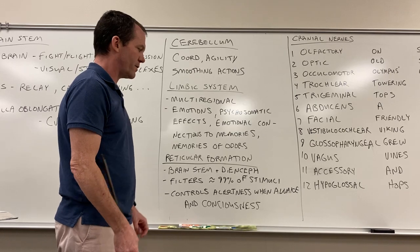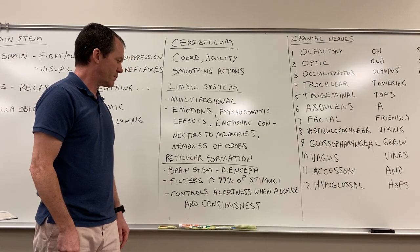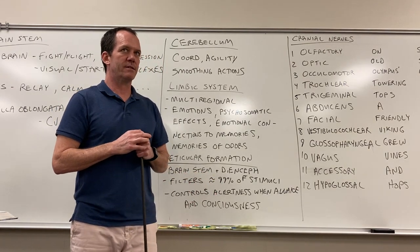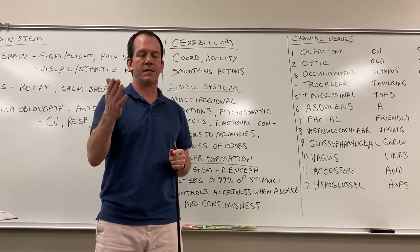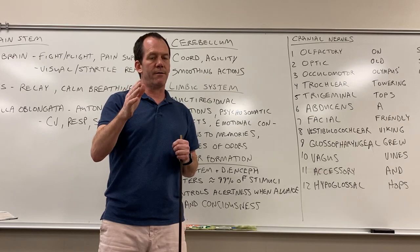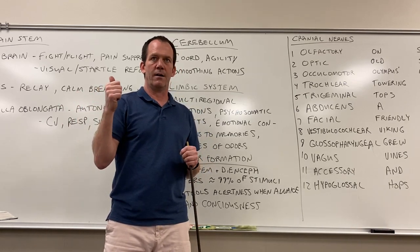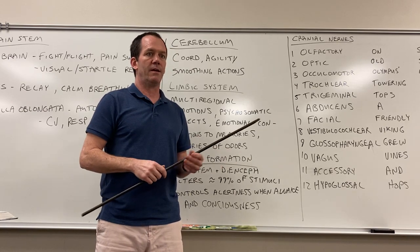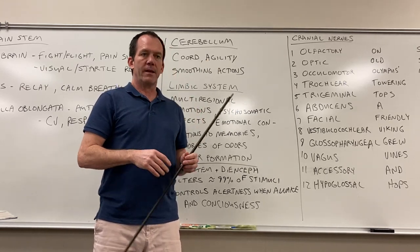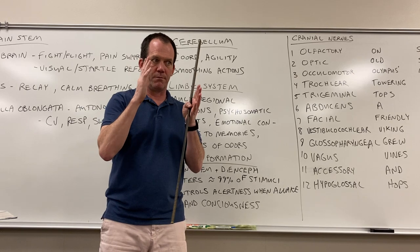The reticular formation is another multi-regional area, mostly brainstem and diencephalon. It's a big filtering region of the brain — it filters out about 99% of stimuli. Picture sitting in your room watching this video: you're hopefully focused on the lecture and not the air conditioner, the activity in the kitchen, your cat or dog, the radio, and countless other distractions. You hopefully are filtering those out to focus on the task at hand.